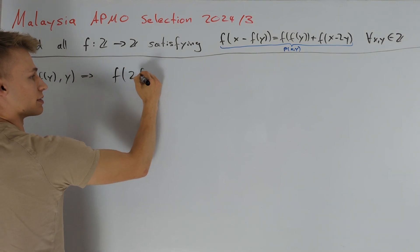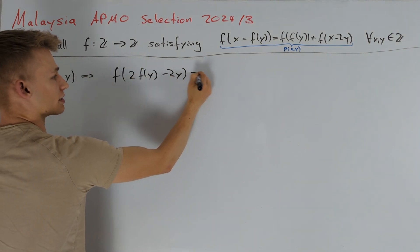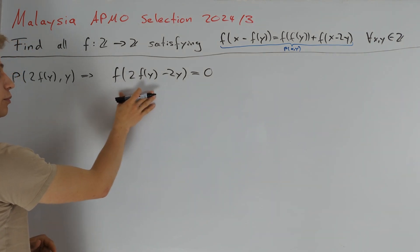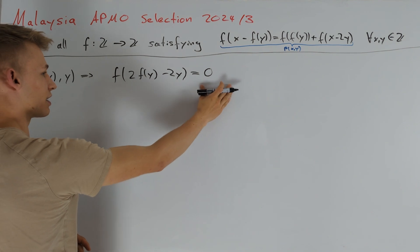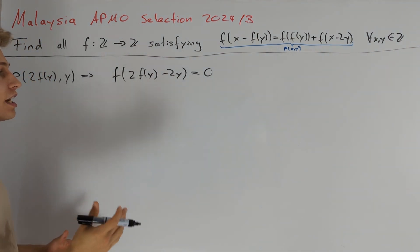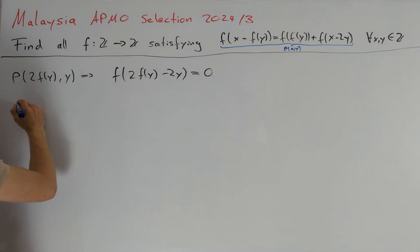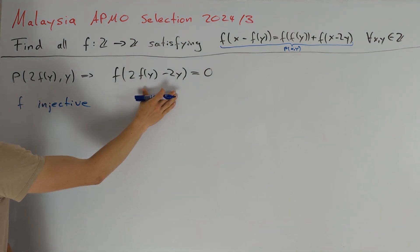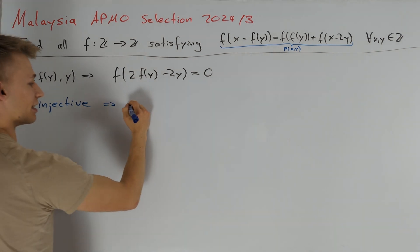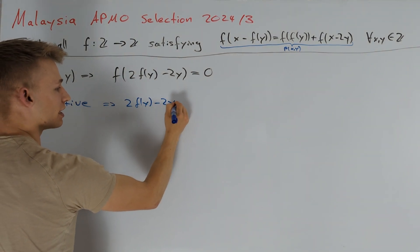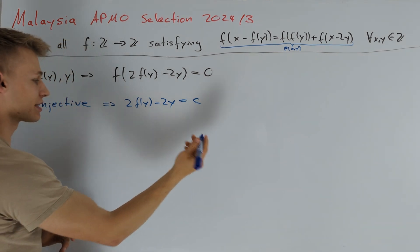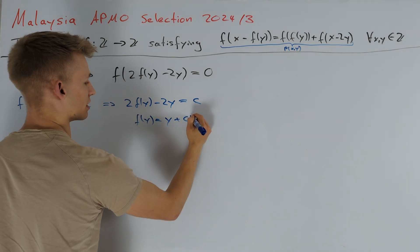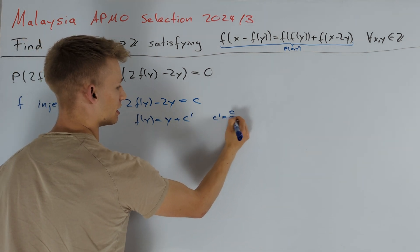So f(2f(y) - 2y) = 0. When we have an equation of this form where on one side we have f of something and on the other side a fixed term, it's always a good idea to consider if our function is injective. Because if f is injective then we know that the argument must be constant. So we directly get that 2f(y) - 2y = c, in other words f(y) = y + c', where c' = c/2.